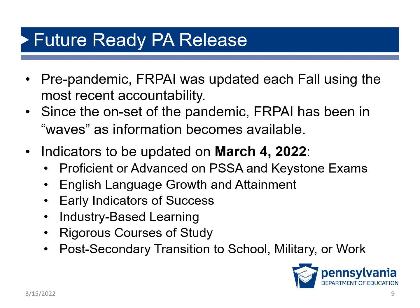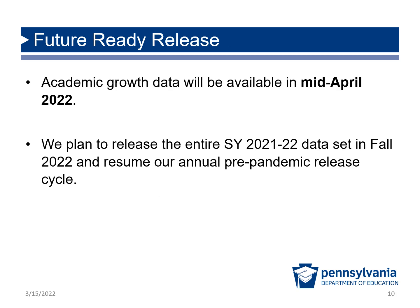Pennsylvania's forward-facing tool for reporting and analyzing the data continues to be the Future Ready PA Index. Before the pandemic, the Future Ready Index was updated each fall using the most recent accountability data for any given school year. Since the onset of the pandemic, the index has been updated in waves as the information becomes available. The indicators listed on the slide were updated on March 4, 2022, with the release of the 2021 assessment data. The academic growth data for school year 2021 will be available in mid-April and posted in May of 2022.